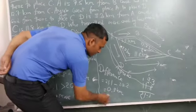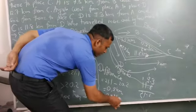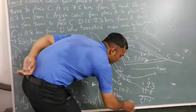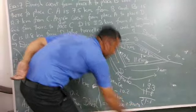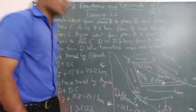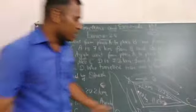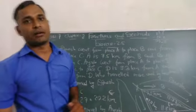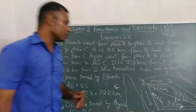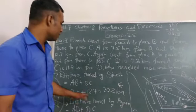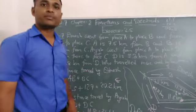Converting it to meter, 0.9 into 1000, this is 900 meter. The difference between who traveled more, Ayub travels more by how much? 900 meter or 0.9 km. So this is simple example. Simply add the distance traveled by both.